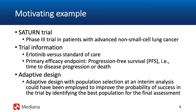The primary endpoint was progression-free survival, also known as PFS, defined as the time from randomization to either disease progression or death. The goal, of course, would be to prolong progression-free survival. This particular trial did not employ an adaptive approach, but I believe that an adaptive design with population selection could have been employed and would have helped make this trial more informative, improving the probability of success by identifying the best patient population for the final assessment.